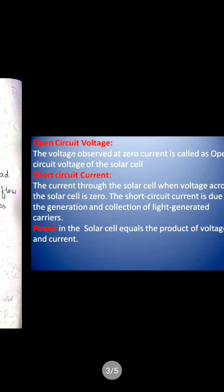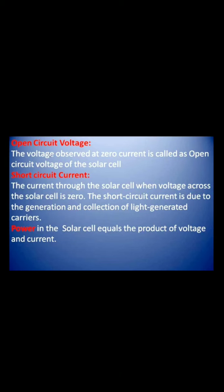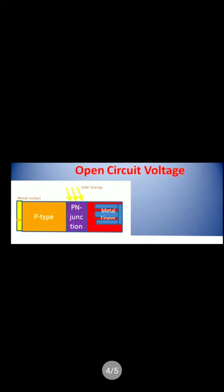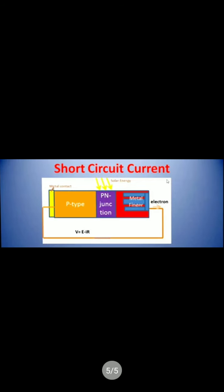Short circuit current is the current through the solar cell when the voltage across the solar cell is zero. Short circuit current is due to the generation and collection of light-generated carriers. When we connect the metallic wire between the P side and the N side — that means we short the two regions — the electrons and holes get a path to flow and this is called short circuit current. When we connect this combination we get zero voltage, but due to that we get one current that is called short circuit current. The electrons will move from the N side towards the P side, but we know the direction of electric current is opposite to the direction of electrons.